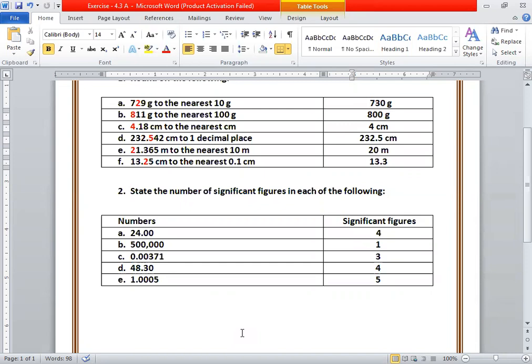First part: 24.00. If you have zeros after the decimal point, they are countable in significant figures. If you have a decimal point and then zeros, we count them. So 2, 4, 0, 0 gives 4 significant figures.